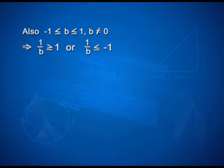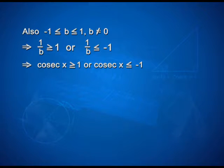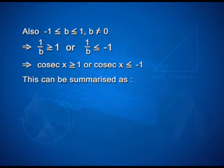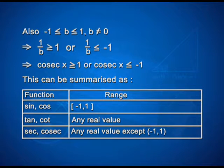Also, minus 1 ≤ b ≤ 1 where b ≠ 0 implies 1/b ≥ 1 or 1/b ≤ minus 1, which implies cosec x ≥ 1 or cosec x ≤ minus 1. This can be summarized as: sin and cos have range [minus 1, 1]; tan and cot have range as any real value; sec and cosec have range as any real value except the interval (minus 1, 1).